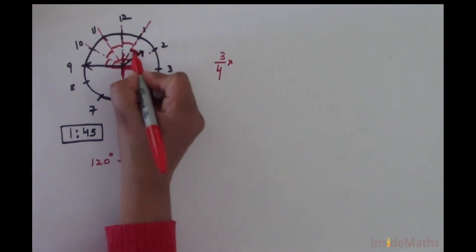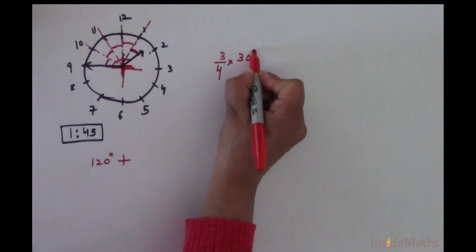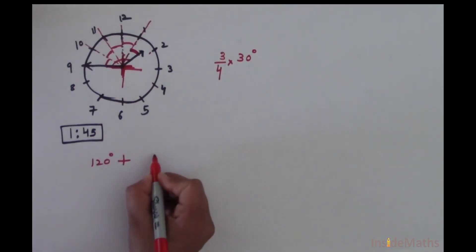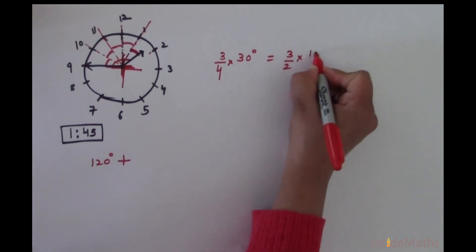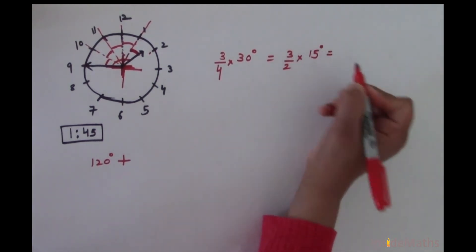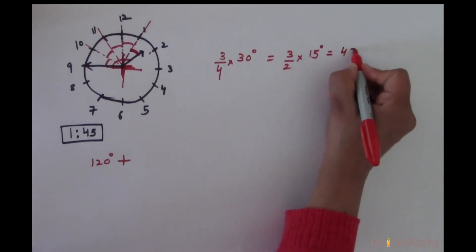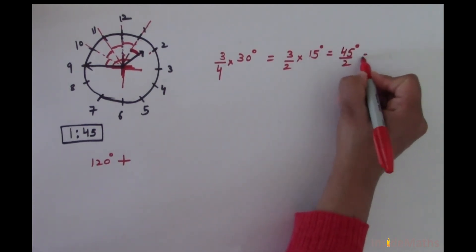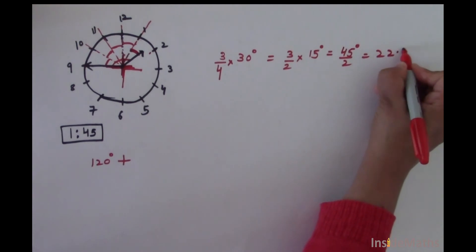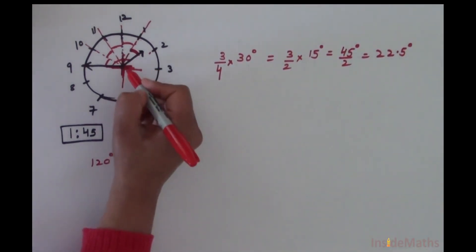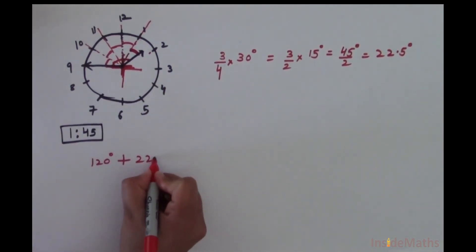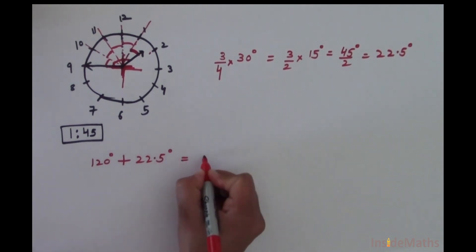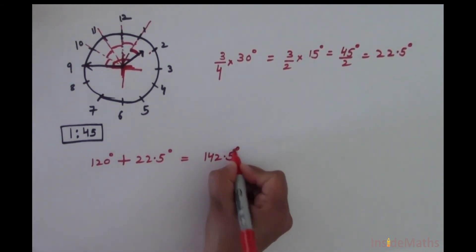So the remaining angle is three-fourths of 30 degrees, which is 22.5 degrees. Therefore, the total angle from the hour hand to the minute hand is 120 degrees plus 22.5 degrees, which equals 142.5 degrees.